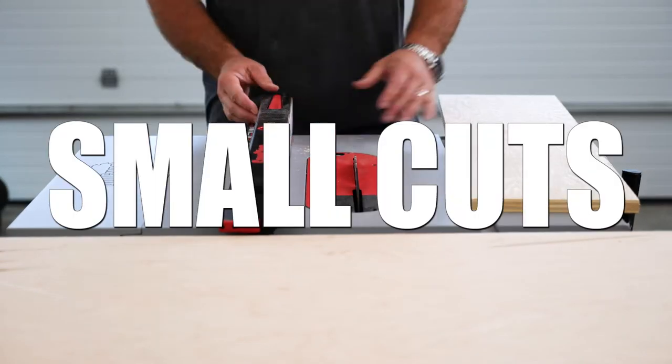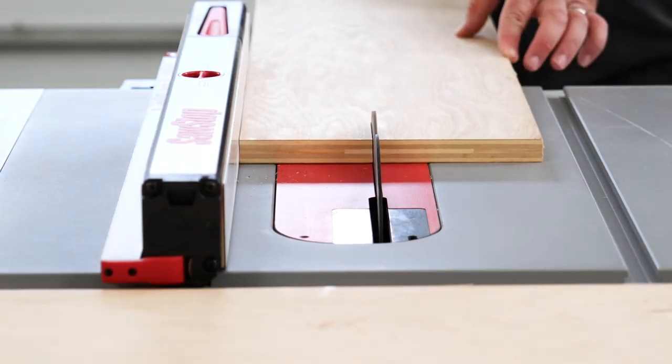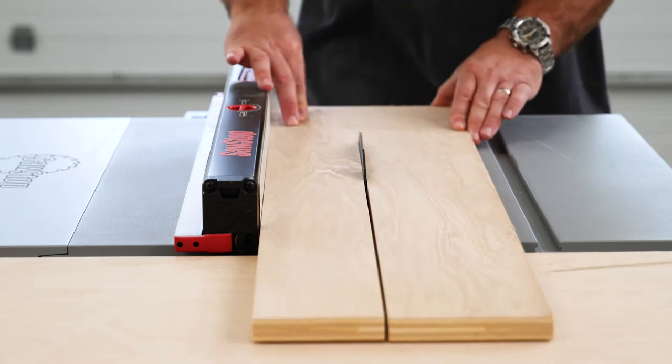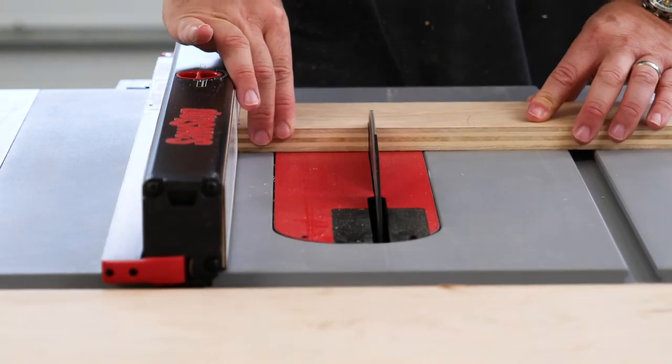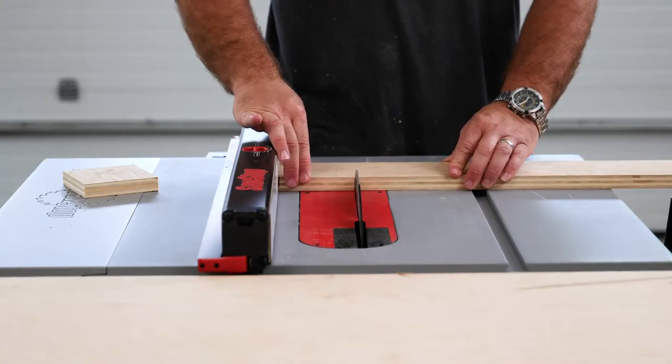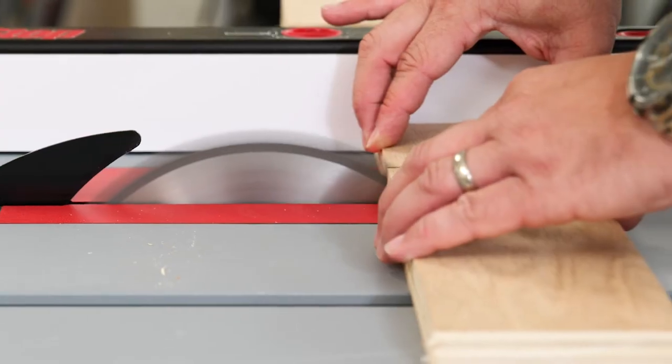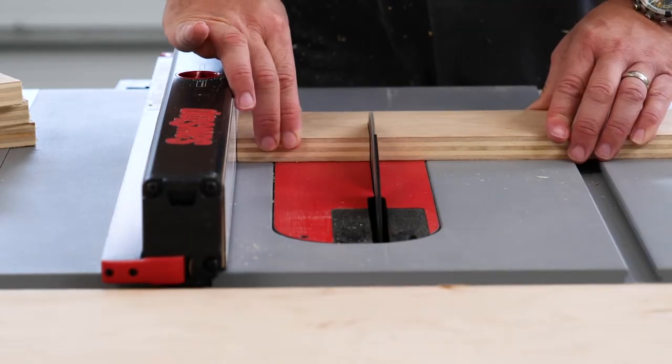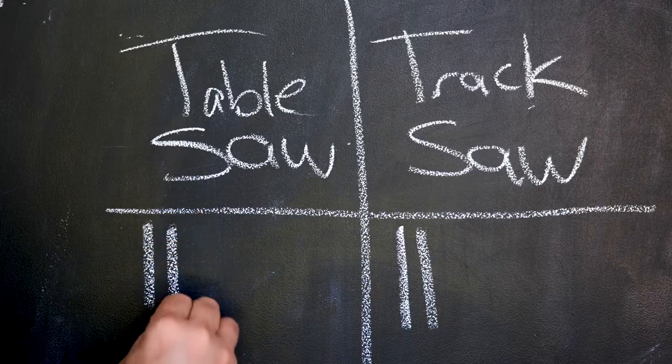Round number three. And here's where the table saw starts to mount its comeback. Yes, if you've got to make a small cut, or lots of small cuts, you need a table saw. The track saw simply cannot do this. I mean, you can make a small cut, but I really should have demonstrated making even smaller cuts. Because with the table saw, you can pretty much make as small a cut as you like. And the speed with which you can make those cuts can't be touched by the track saw.